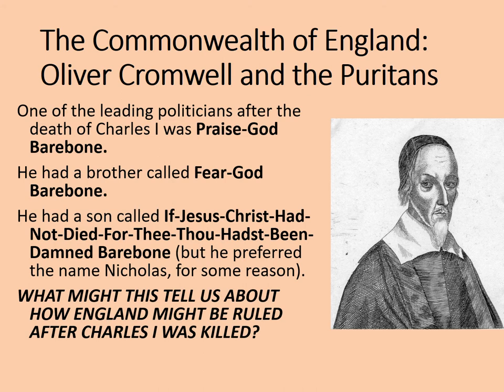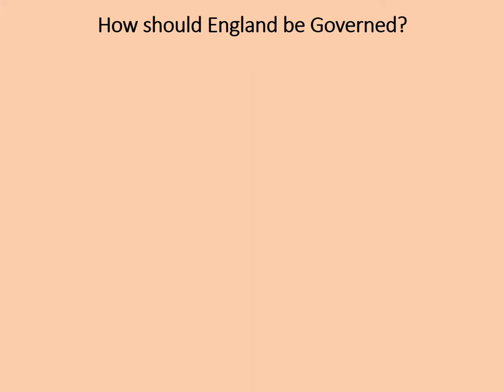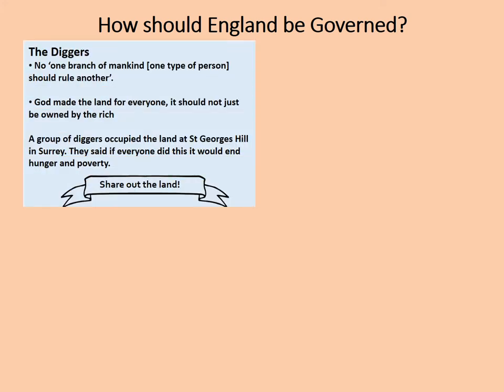We're going to consider the different groups trying to rule England at this time. How should England be governed? The first group was known as the Diggers. Their main beliefs were: no one branch of mankind should rule another; God made the land for everyone and it should not just be owned by the rich. A group of Diggers actually occupied land at St George's Hill in Surrey, saying if everyone did this, it would end hunger and poverty. Their slogan, you might say, was: share out the land.